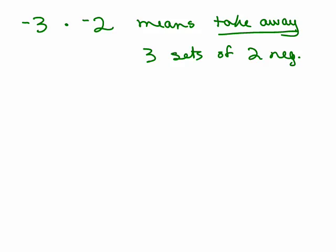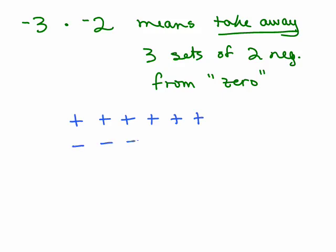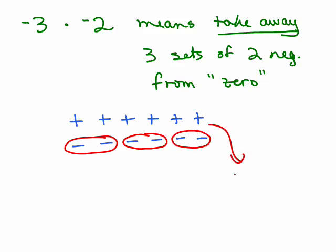Here's the tricky one — what if they were both negative? Negative 3 times negative 2. Since the first number is negative, it doesn't make sense to put in 3 sets, so we're going to think of that as taking away. Negative 3 times negative 2 means take away 3 sets of 2 negatives — but from what? From zero. We represent 0 as the same number of positives and negatives. Starting from 0, I'm going to take away 3 sets of 2 negatives: 1 set, 2 sets, 3 sets. And what you have left are 6 positives.